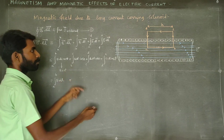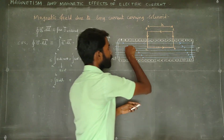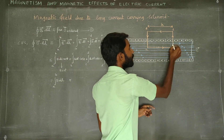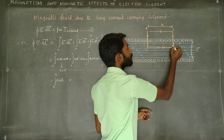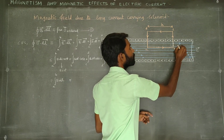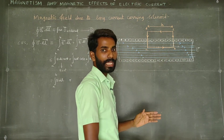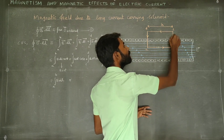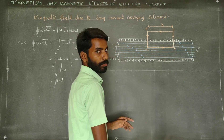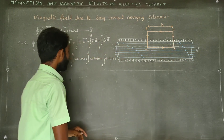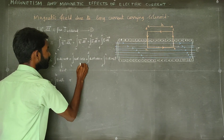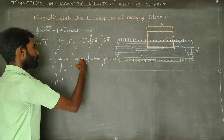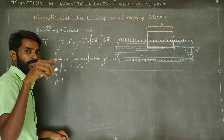Next, in the BC segment, the B direction is like this and the dL direction is perpendicular to it. The magnetic field direction and the dL direction form a 90-degree angle. Therefore theta becomes 90 degrees. What is cos 90? It equals zero.